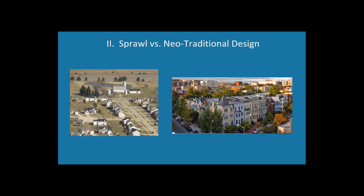Here you can see how sprawl is encroaching on farmland and open space — not terribly efficient use of space, a lot of private space. Duany is recommending we think more about denser developments where more people are packed into smaller spaces. That might sound bad, but when you have more people in a smaller space, there are more opportunities for public transit and more chance you'll have amenities like grocery stores and coffee shops. There's a trade-off, but there's lots of good stuff about living in these environments.